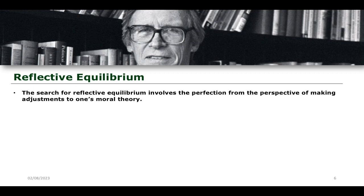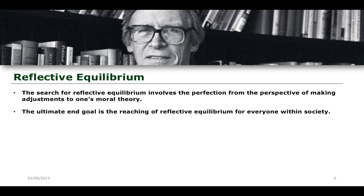The search for reflective equilibrium involves the perfection from the perspective of making adjustments to one's moral theory. The ultimate end goal is to reach equilibrium for everyone within society. If you were to Google 'reflective equilibrium,' you get the result that it is a state of balance or coherence among a set of beliefs arrived at by a process of deliberative mutual adjustments among general principles and particular judgments. This applies very nicely to the idea of the original position — trying to establish some kind of balance or coherence among a set of beliefs that are often very different, bringing about a balance through the process of deliberate and mutual adjustment of one's understandings of general principles.